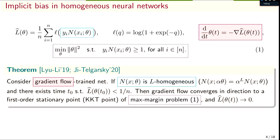I want to quickly review some recent work on implicit bias in neural network classification problems. We'll be looking at classification problems where you have some convex surrogate for the 0-1 loss — either the logistic loss or the exponential loss, the same results apply. We'll look at gradient flow, which is a dynamical system where the change in the parameters is governed by the negative gradient of the loss at that time.